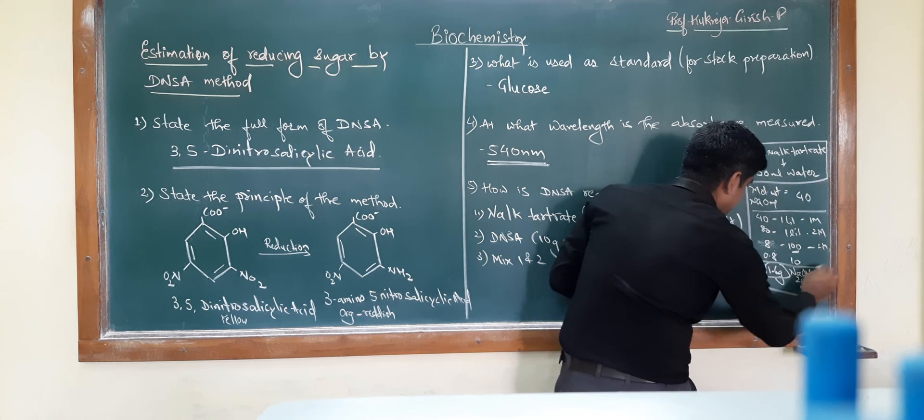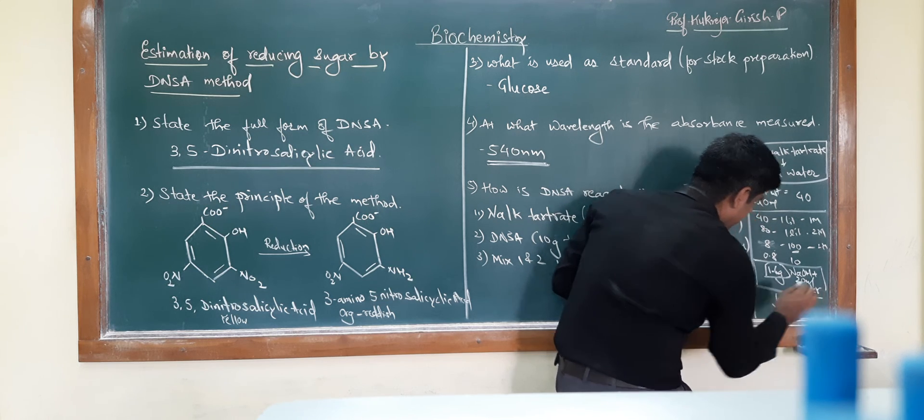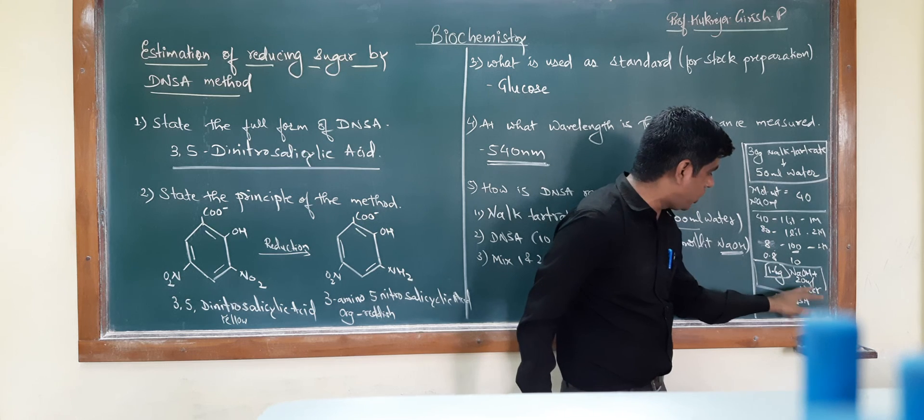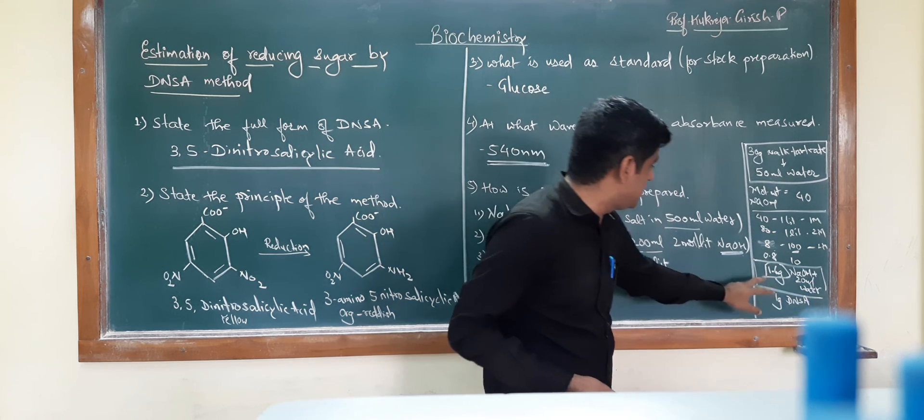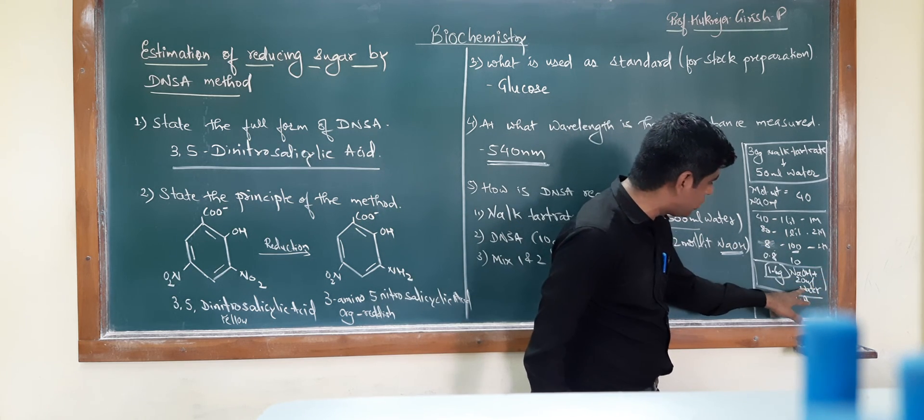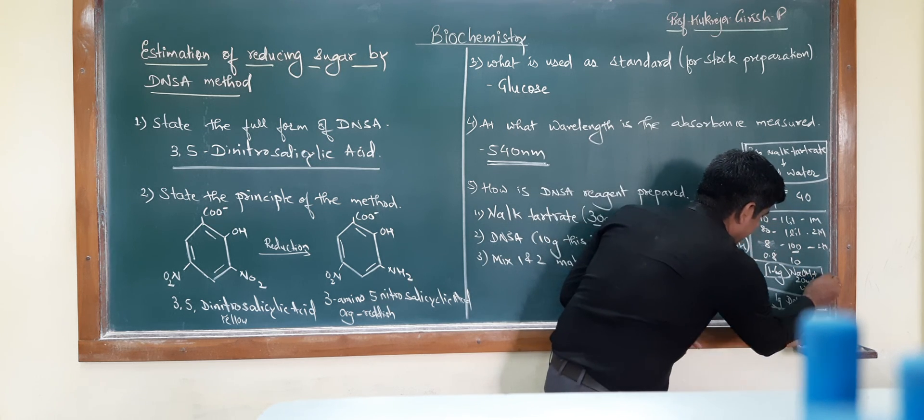In this, I will add 1 gram of DNSA. Remember, complete the dissolution of NaOH in water, only then add DNSA. Don't add DNSA before this dissolution is complete. Once your 1.6 grams of NaOH has completely dissolved in 20 ml of water, only then add 1 gram of DNSA.